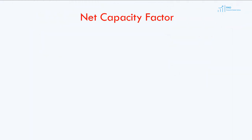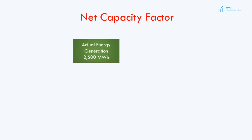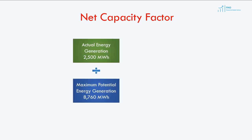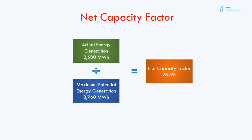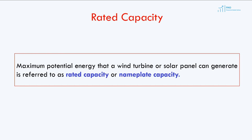There is one important ratio in the power sector called the net capacity factor. Net capacity factor is the ratio of actual energy generated in a year to maximum potential energy generation in one year. Based on the numbers from the previous example, the net capacity factor would be 28.5%. By the way, the maximum potential energy that a wind turbine or solar panel can generate is referred to as rated capacity or nameplate capacity.